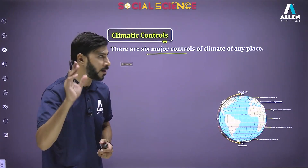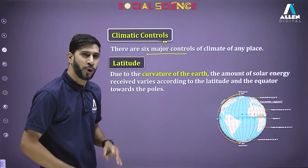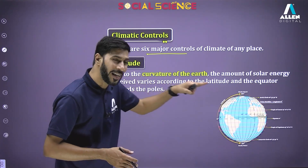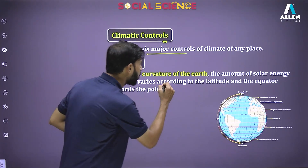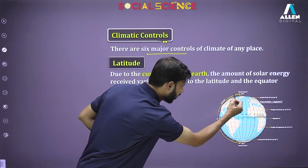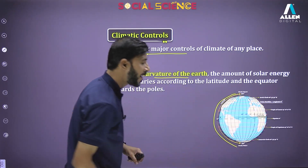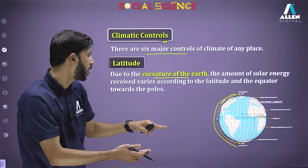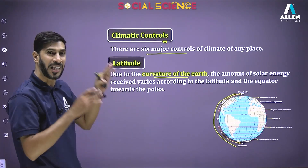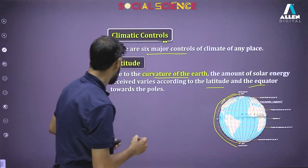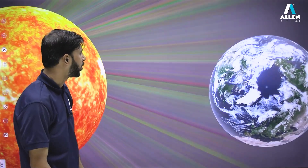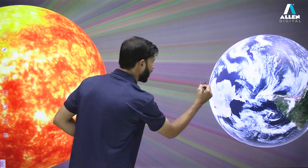The first one is latitude — where the place lies. Due to the curvature of the earth, the amount of solar energy received varies according to latitude, from the equator towards the pole. Let's understand it through animation. We can see the earth here and we can see the sun, and when the rays fall directly here...